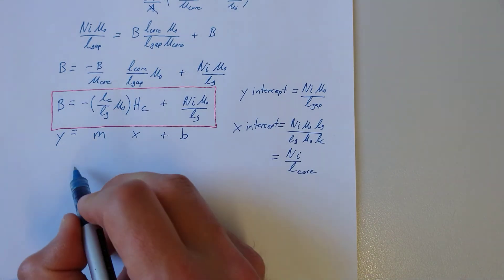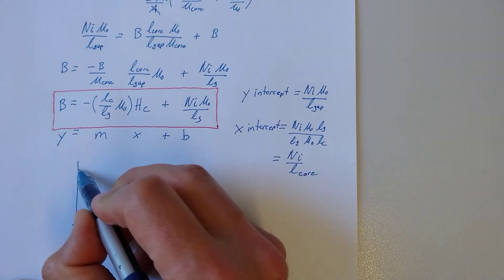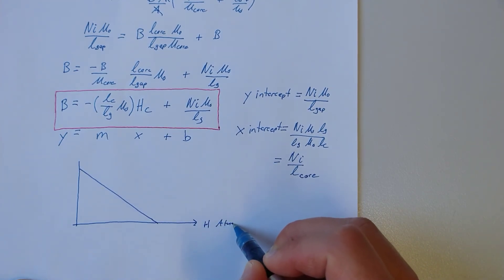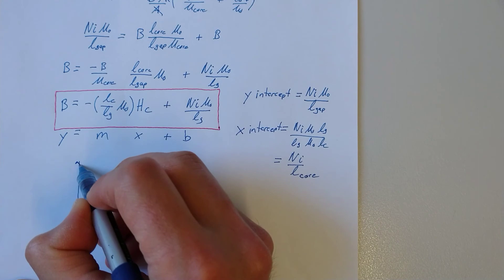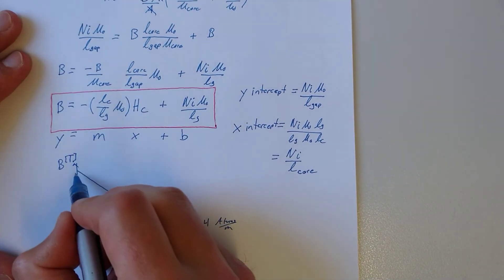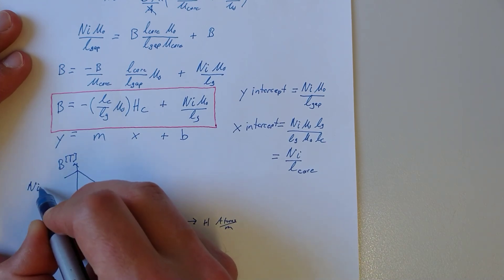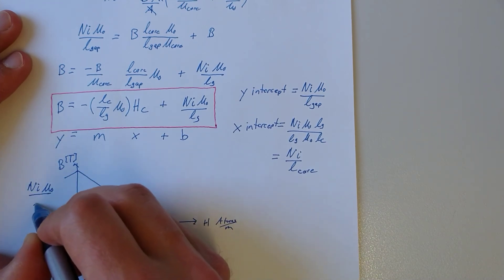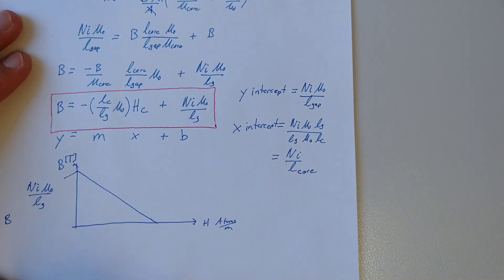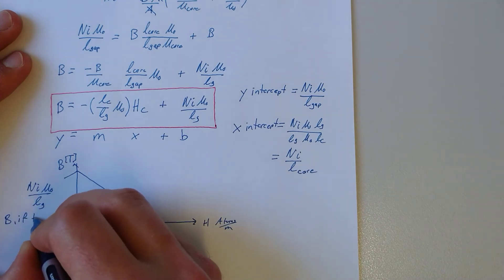If we try to show this on a plot, we can think about what they mean. So this is H in ampere turns per meter. This is B in Tesla. We know that this intercept is NI mu naught over LG, and that is interpreted as B if we ignore the core or if the core has 0 reluctance.